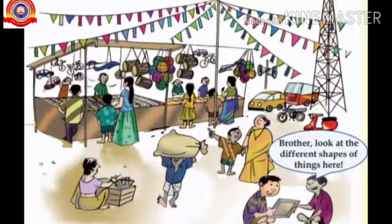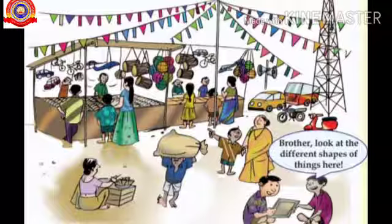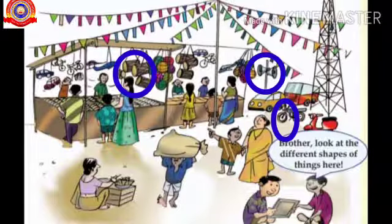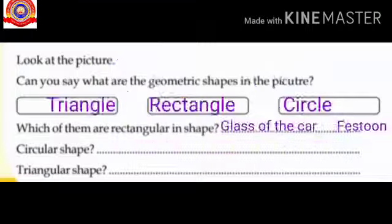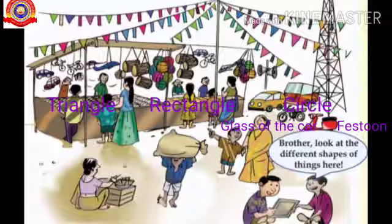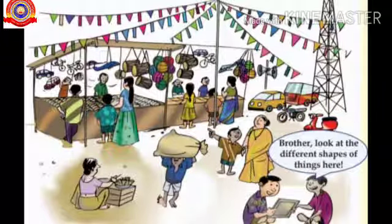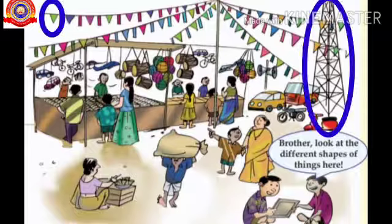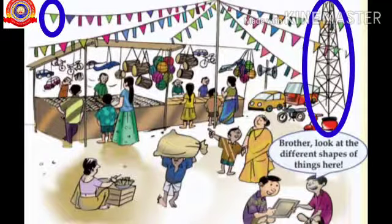Children, in this picture, which of them are circular in shape? Yes, drums, speaker, wheels, etc. In this picture, which of them are triangular in shape? Yes, festoon, tower, etc.